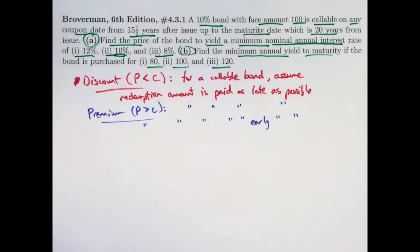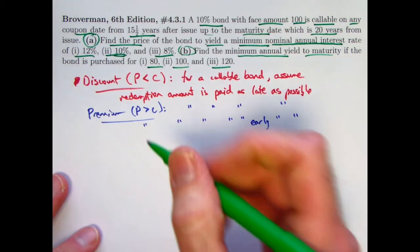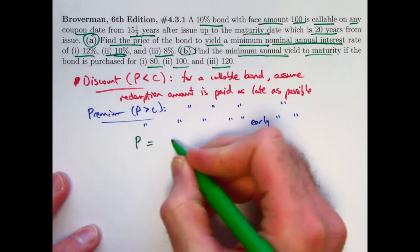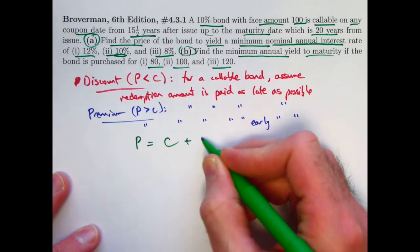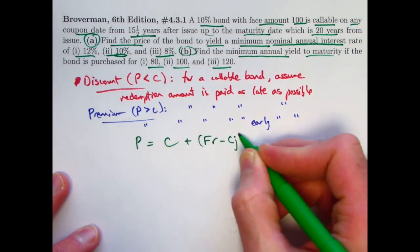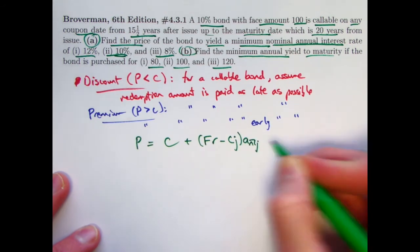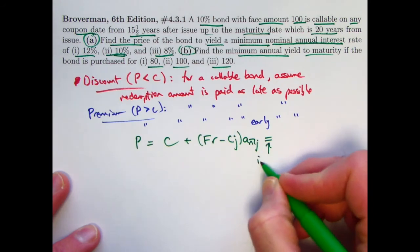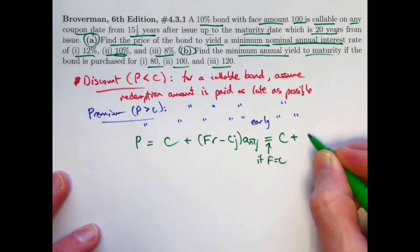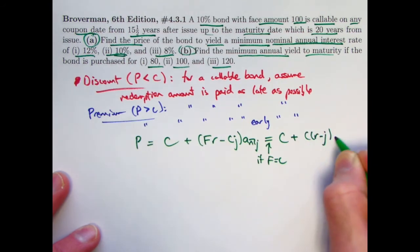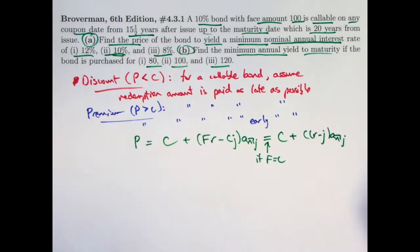What if p equals c? That would be the situation where the redemption value and the price at any point in time, in fact, right after any coupon payment, would be the same, 100 in this case, and it really wouldn't matter when the bond is redeemed. You'd have the same yield in any situation. Now you could use the basic formula to help you answer these questions now, but you could also use the premium discount formula, which is what Broverman chooses to do. P equals C, the redemption value, plus in parentheses F times r, the coupon amount, minus C times j times a n j. And by the way, we are doing the simplest type of callable bond problem.